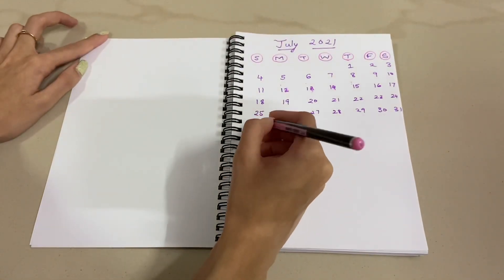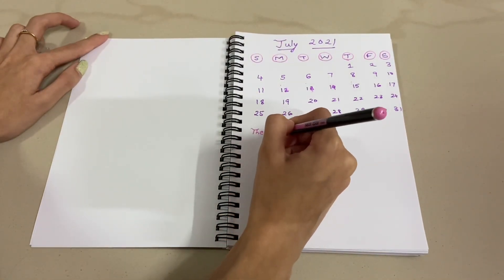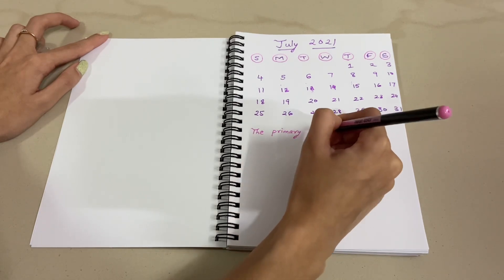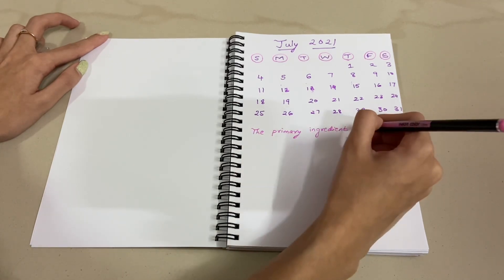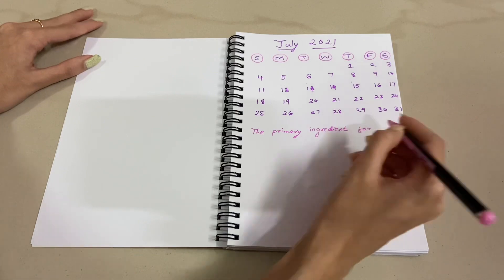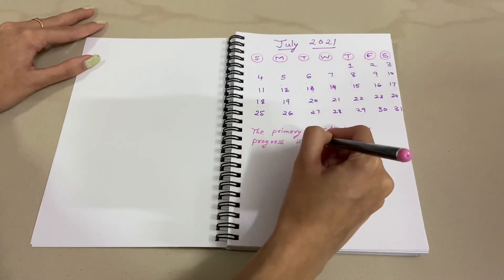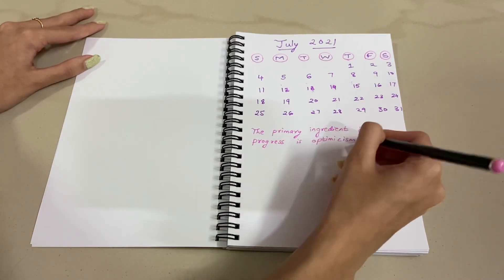Then on the bottom, I will write a quote for this month. So I will choose any nice motivational quote from the internet, and the quote for this month is: the primary ingredient for progress is optimism.